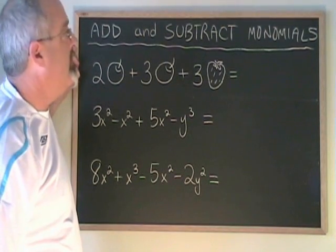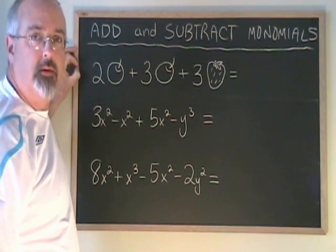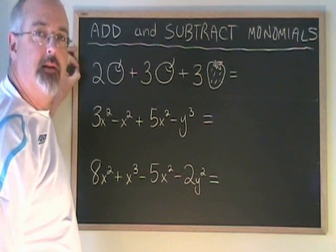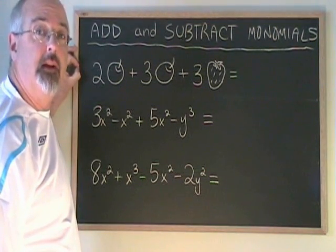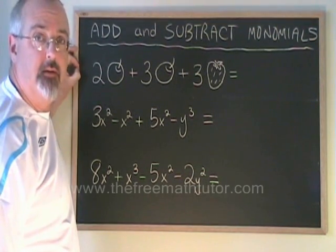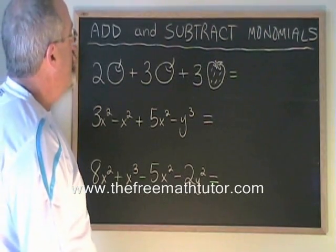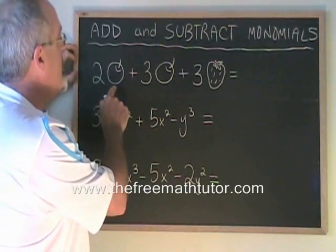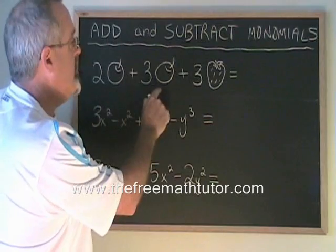In this video we are going to learn how to add and subtract monomials. The rule for adding and subtracting monomials is that you have to keep similar terms together. Here's an example: we have two apples plus three apples plus three strawberries.